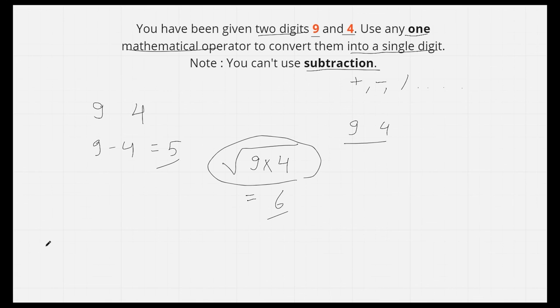By rearranging these digits, we can make them 49 instead of 9 and 4, and just use the square root. This would be equal to 7. Hence, we would be using only one mathematical operator and both the digits 4 and 9.